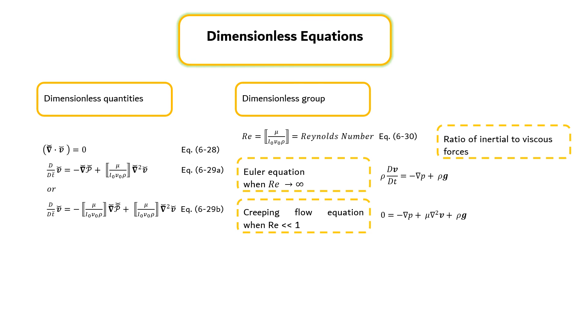Additional dimensionless groups may arise in the initial and boundary conditions. Two that appear in problems with fluid-fluid interfaces are given by equation 6-31 and 6-32. The Froude number contains the gravitational acceleration, whereas the Weber number contains the interfacial tension which may enter into the boundary conditions.